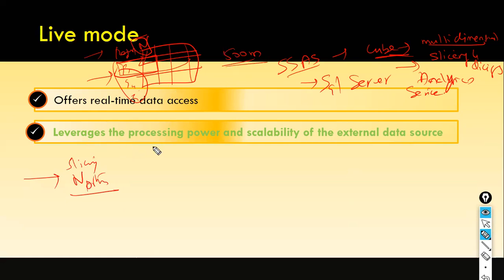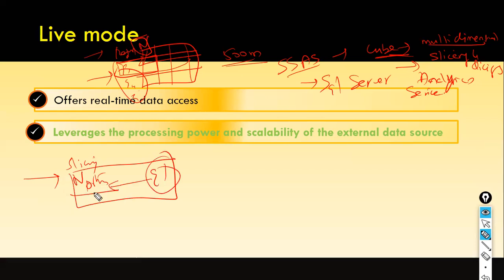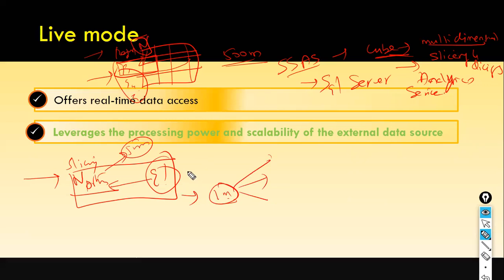Your reporting requirement might be to view only north region Q1 total sales. So you slice to north region Q1 data — maybe 1 million records — and then within that subsetted data you do multi-dimensional analysis, such as salesperson-wise or district manager performance. Subsetting the data and then doing further analysis within it is called slicing and dicing.